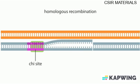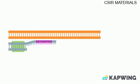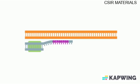Exactly what happens at a chi-site is not fully understood. But the outcome is that the REC-BCD enzyme produces a double-stranded molecule with a 3' overhang, as is required for the initiation of recombination.